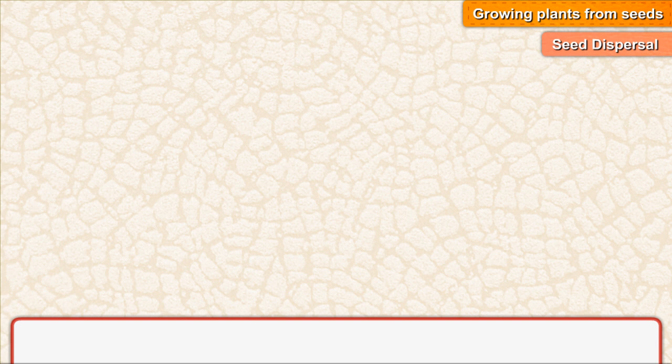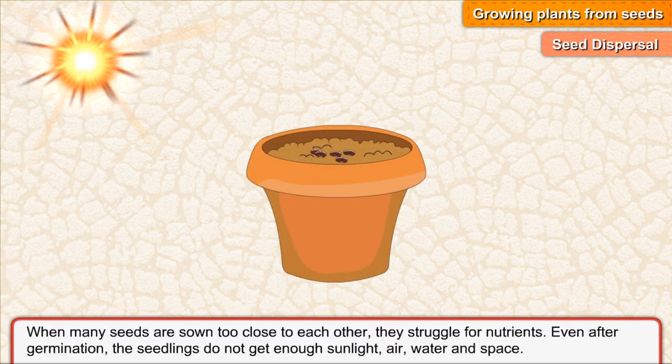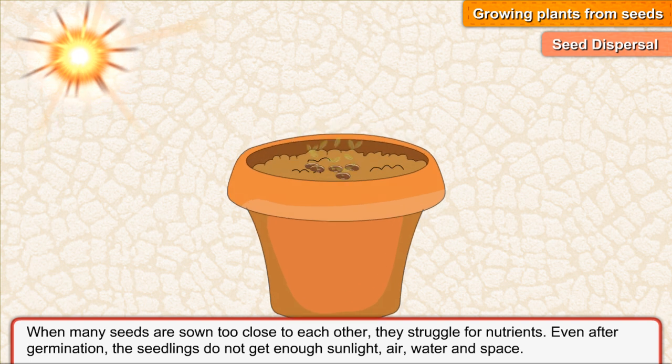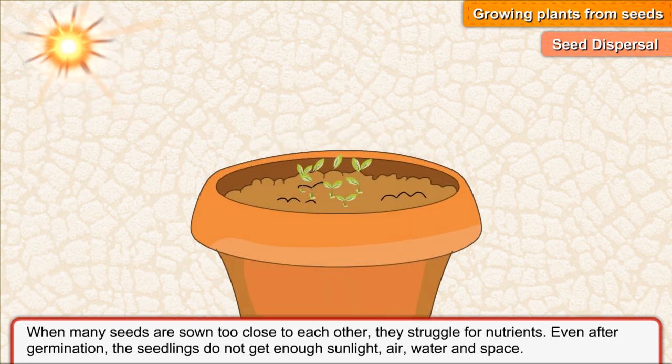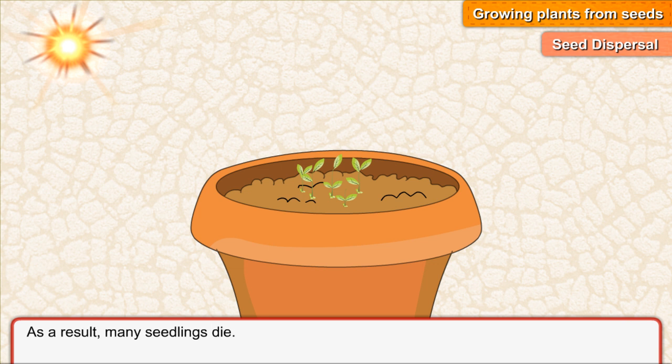Seed dispersal. When many seeds are sown too close to each other, they struggle for nutrients. Even after germination, the seedlings do not get enough sunlight, air, water and space. As a result, many seedlings die.